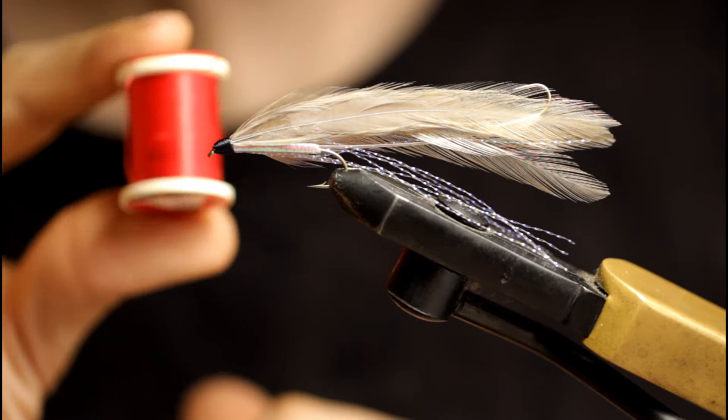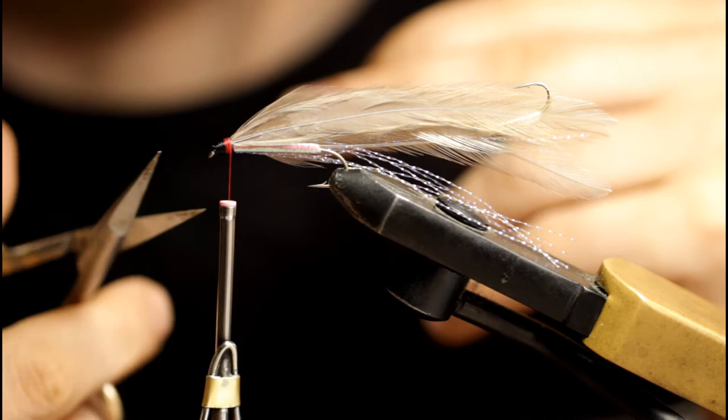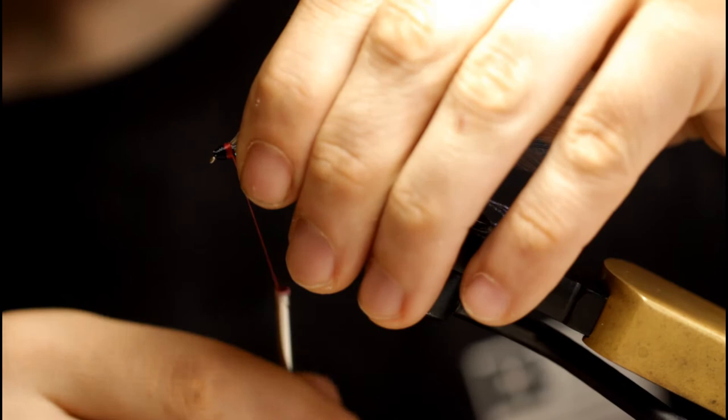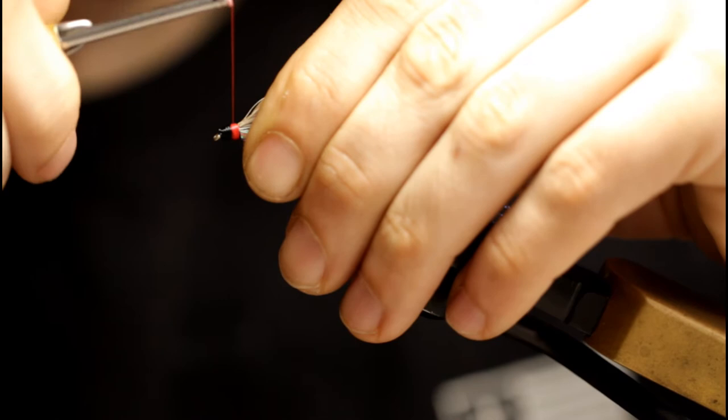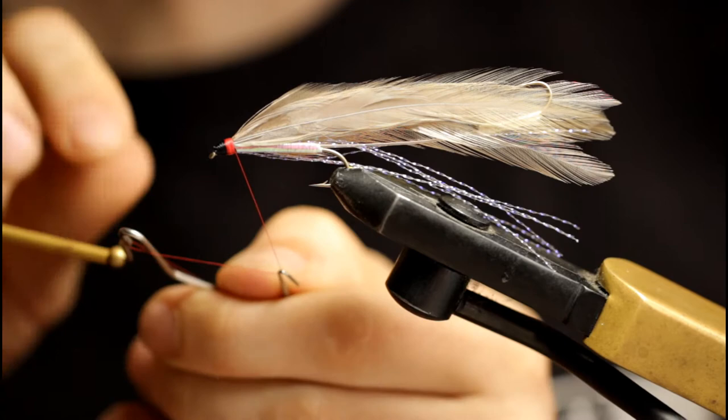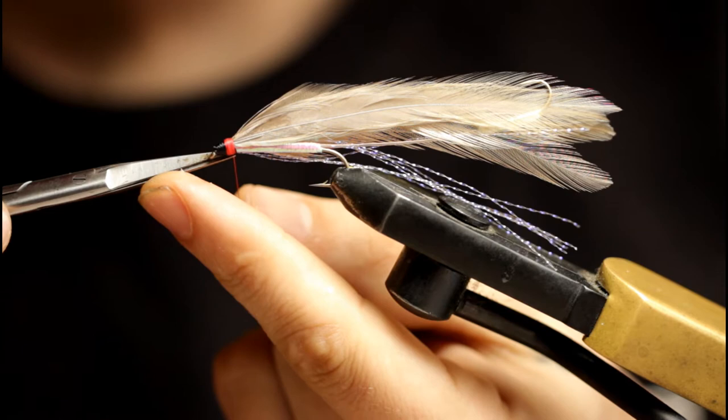Now grab the red thread. This is just 70 denier. Start that at the back. Trim off the tag. And just building up a nice bright red stripe here. It's supposed to imitate gills, bleeding gills. And snip it off.